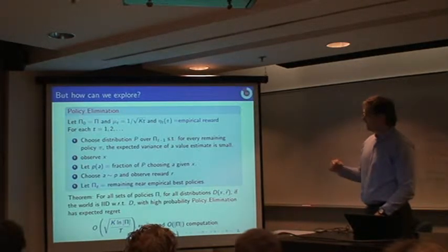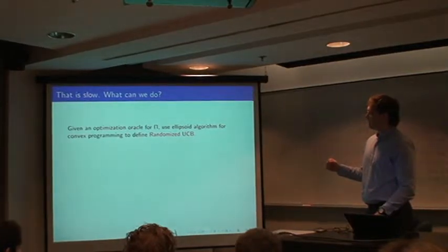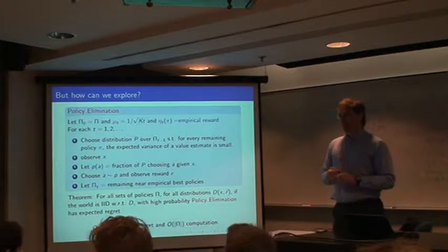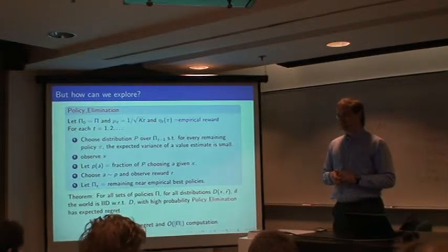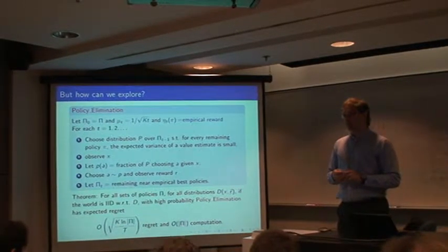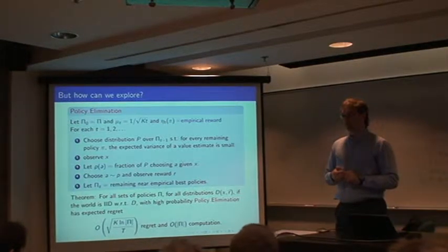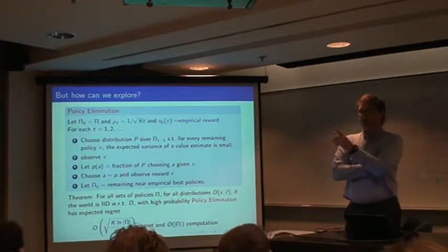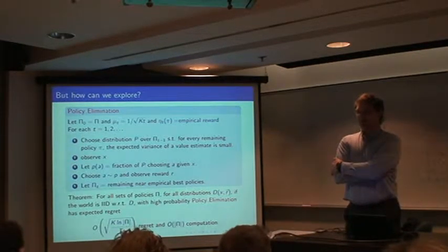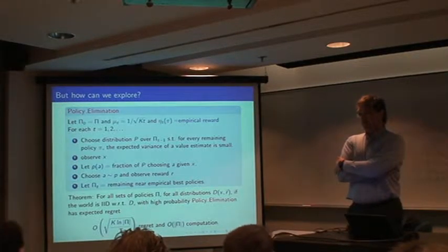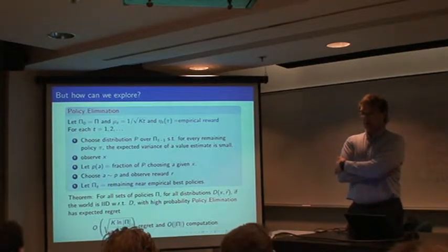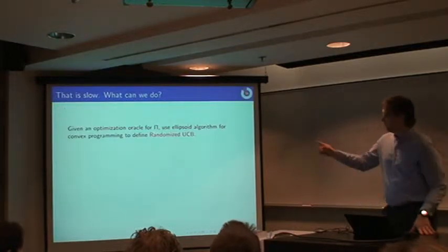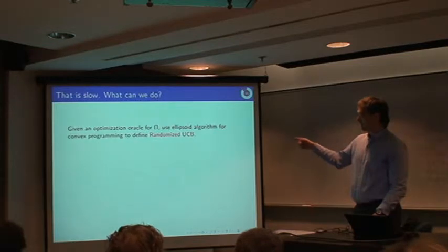So one problem with this algorithm is that it's occasionally slow because we're enumerating policies and taking things. So a disadvantage of this is it's slow. There's a way to fix that, at least in theory. So if you have an optimization oracle, you solve it by a supervised learning algorithm. If you're running the same policy set, turns out that you can employ the ellipsoid algorithm to get something which is poly(T, k, log policies) computation.